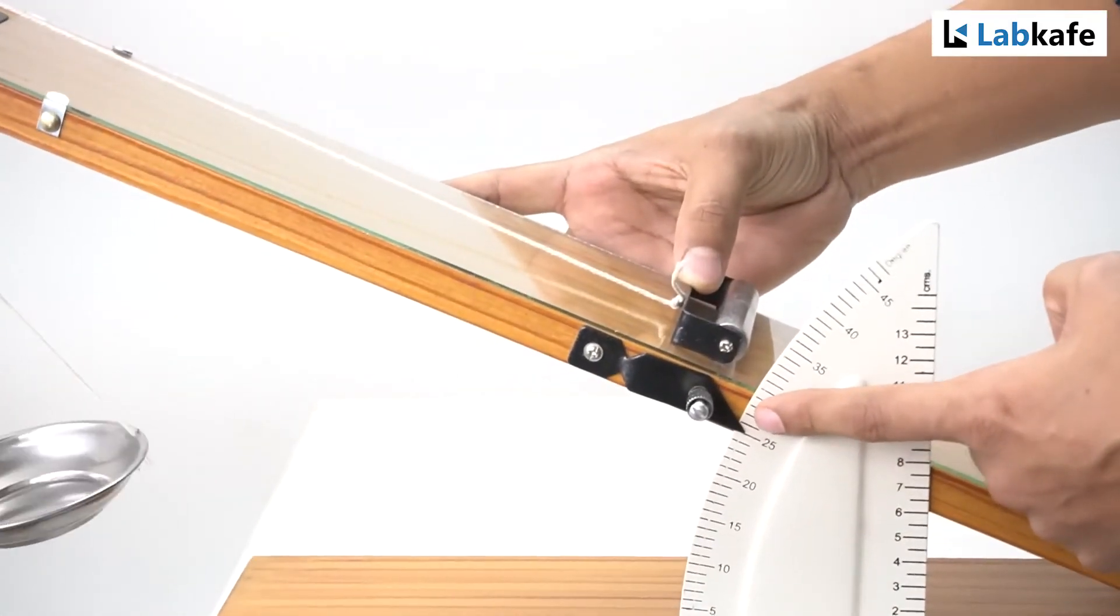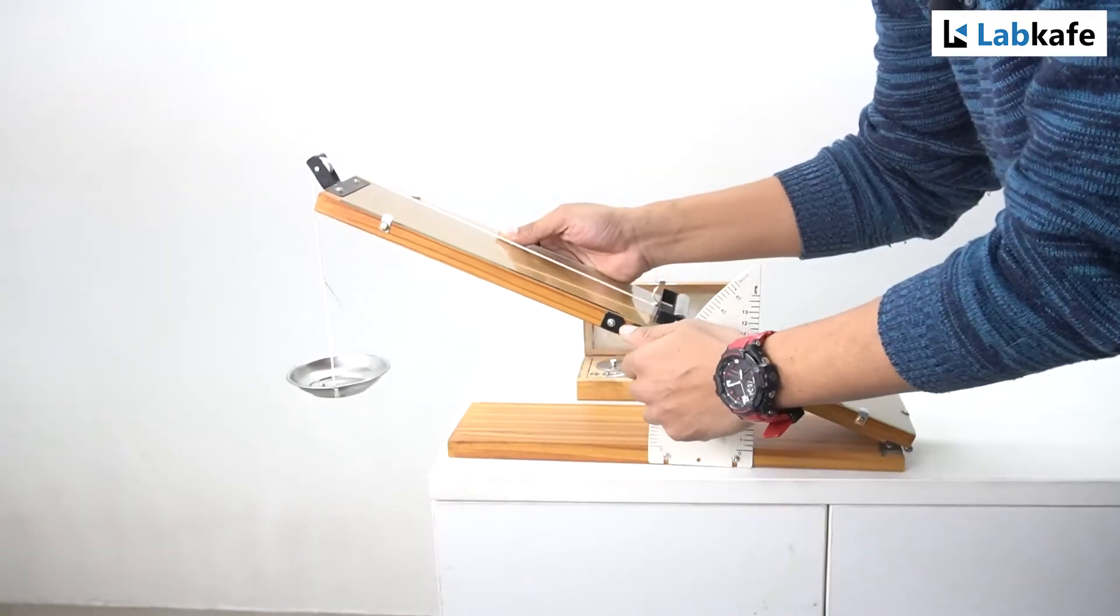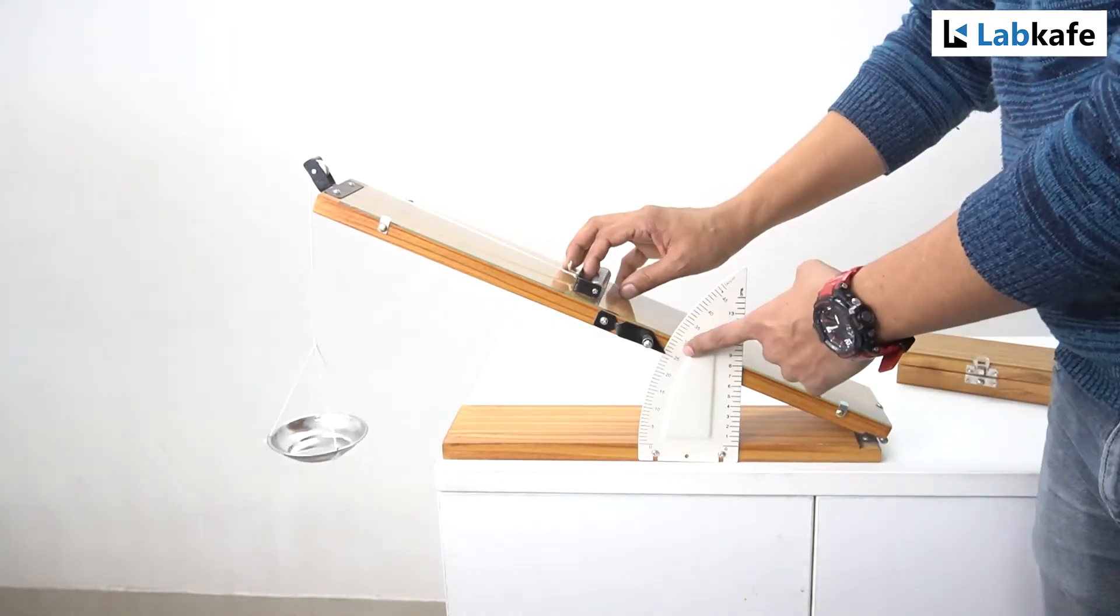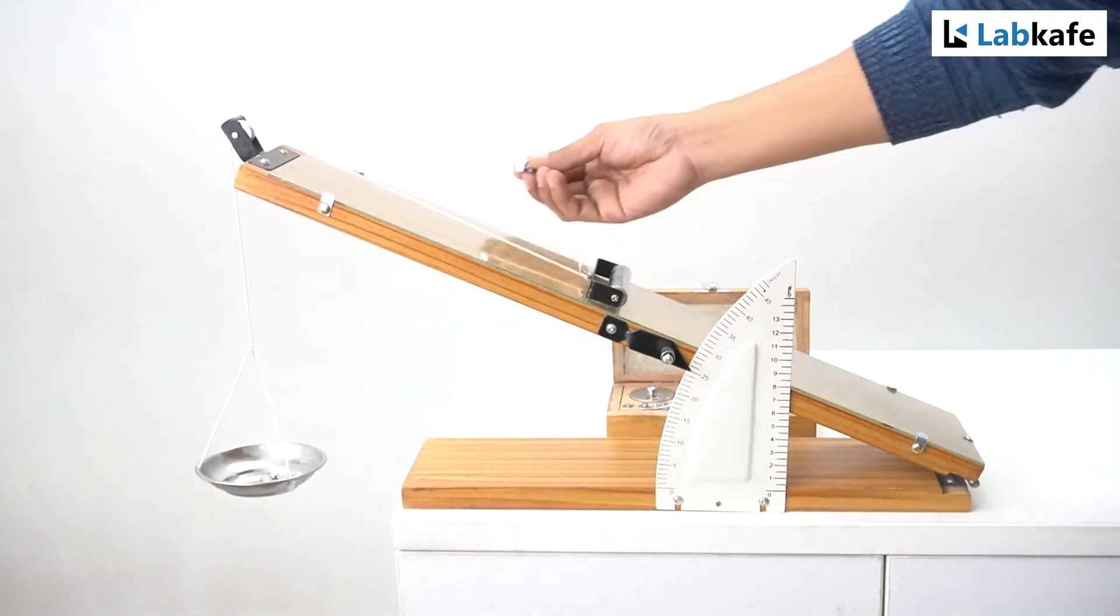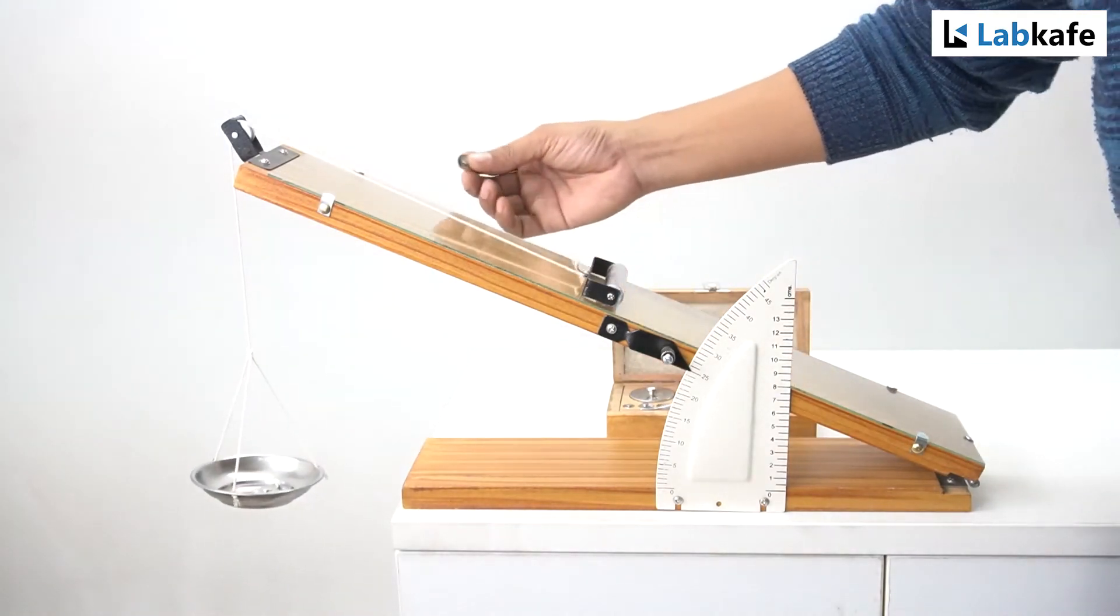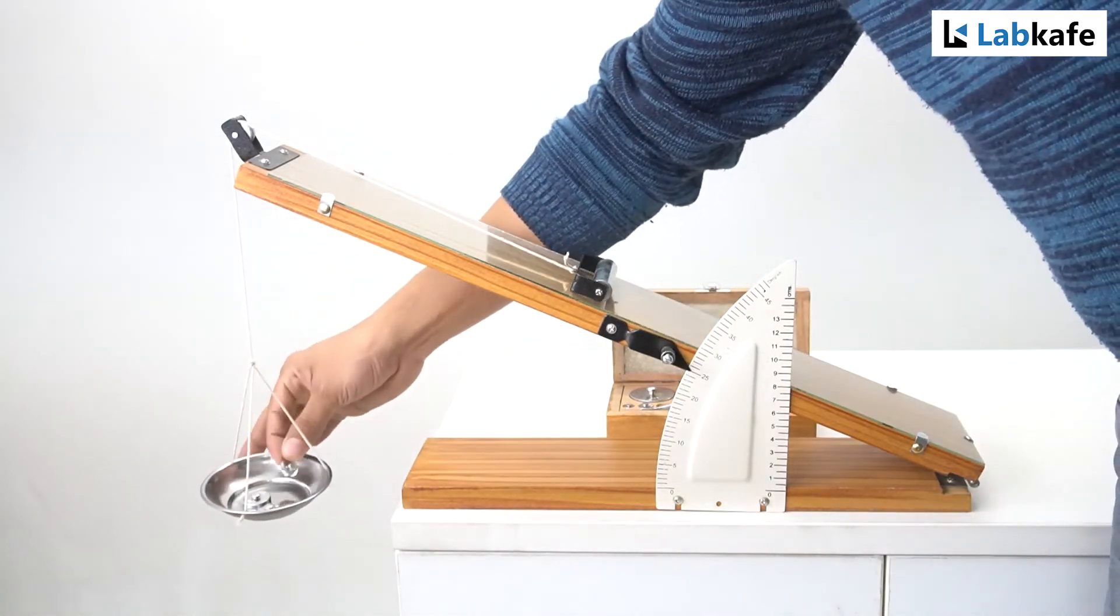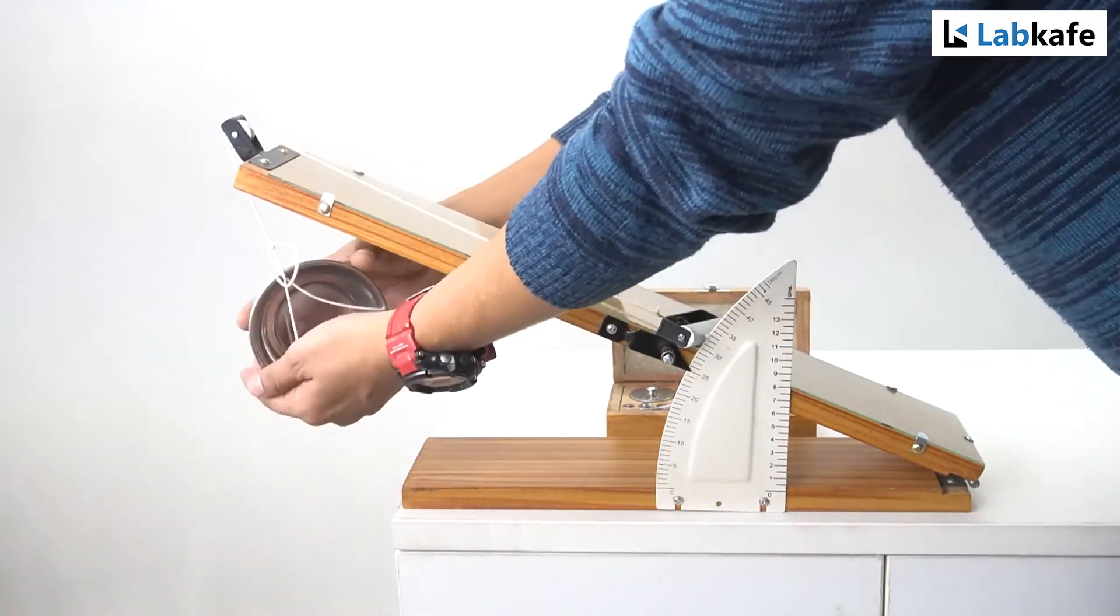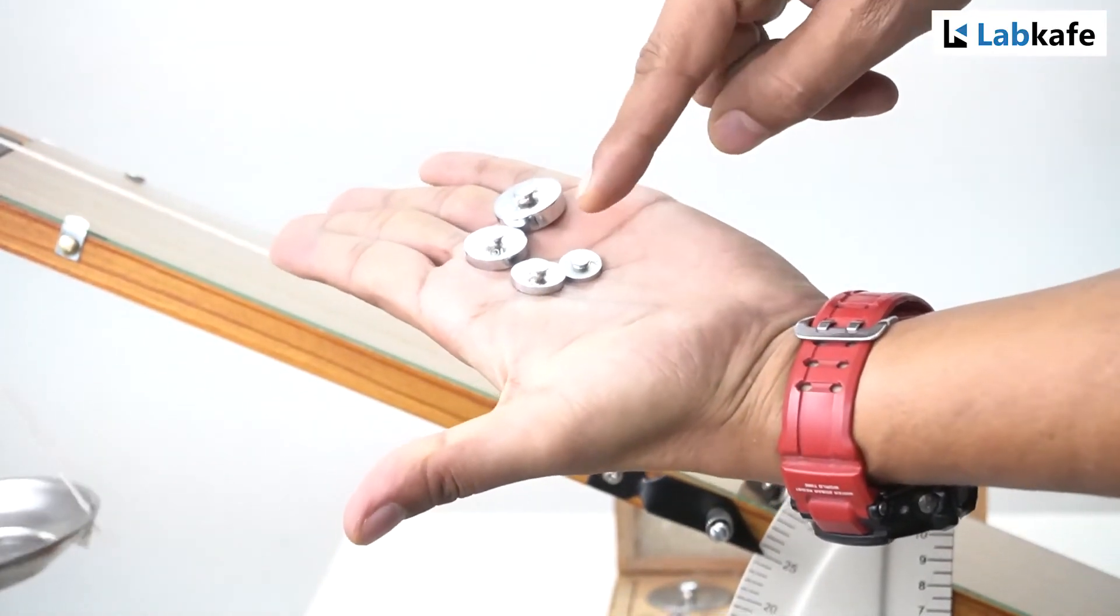This angle is called the angle of repose. Tighten the screw on the protractor at an angle a little greater than the angle of repose, say 25 degrees. Now put more weights on the pan slowly in steps and find the exact weight at which the roller begins to move upward with a uniform velocity. As we can see, the total weight is 37 grams.